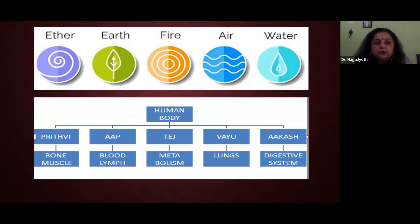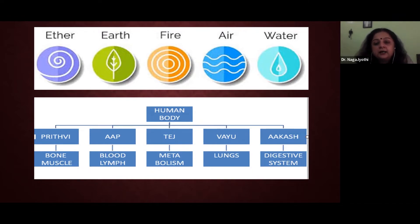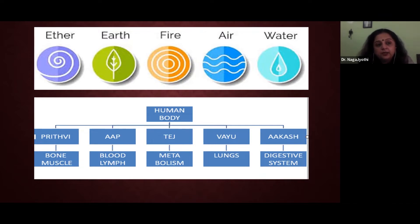Prithvi represents bone and muscle; aap represents blood and lymph; tej or fire represents metabolism; vayu represents the lungs and air; and akash or ether is related to the digestive system. This is how the five elements are represented in our human body, which we call the panchabhautika sharir.